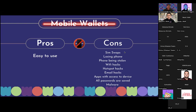Another con is losing your phone. What do you do if your phone is lost? Even if you have the seed phrase, what if someone gets into your phone or there's no password on it? Phone being stolen — you're at a bar or cafe, your phone is stolen. What then? Wi-Fi hacks are also something not many people know about.